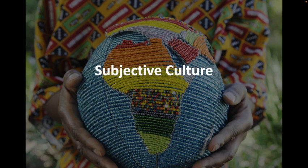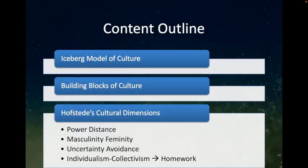Welcome back, class. In our previous lesson, we discussed culture and communication. Now we're going to talk about subjective culture. For today's lesson, we will cover the iceberg model of culture, building blocks of culture, and Hofstede's cultural dimensions, which include power distance, masculinity/femininity, uncertainty avoidance, and individualism/collectivism.